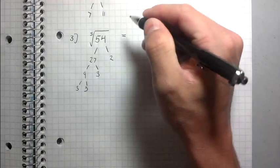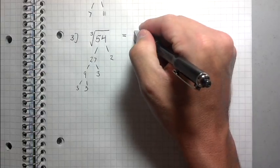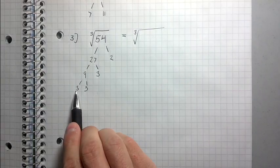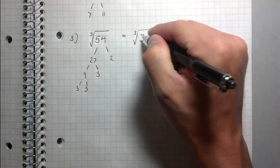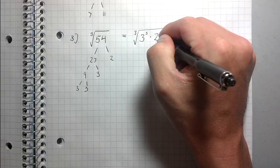So I'm going to do the same thing I've been doing. I'm going to rewrite this problem. Instead of the cube root of 54, I'm going to rewrite it as the cube root of 3 cubed, 3 to the third, because I have three threes, times 2, because I only have 1, 2.